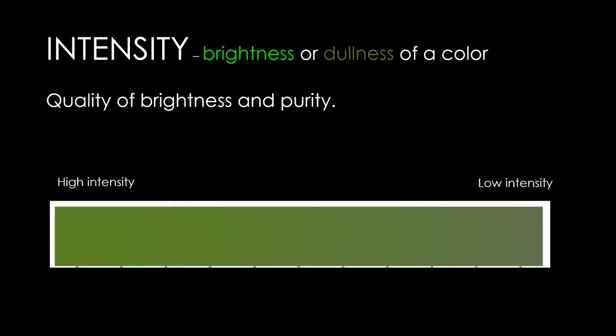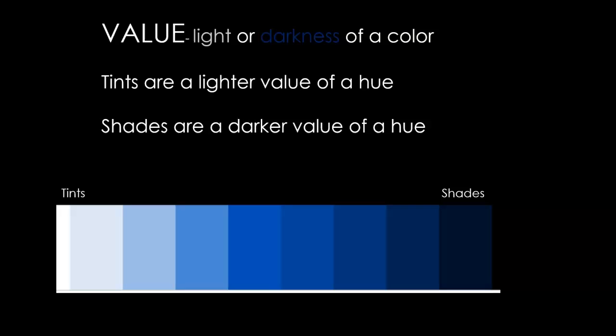High intensity colors are really bright, where low intensity colors are very dull. Value refers to how light or how dark a color is. Tints are lighter values of a color, where shades are darker values of a color.